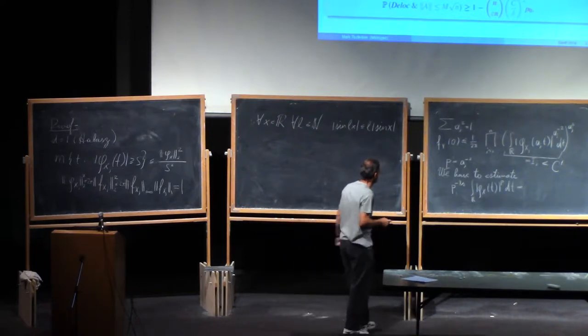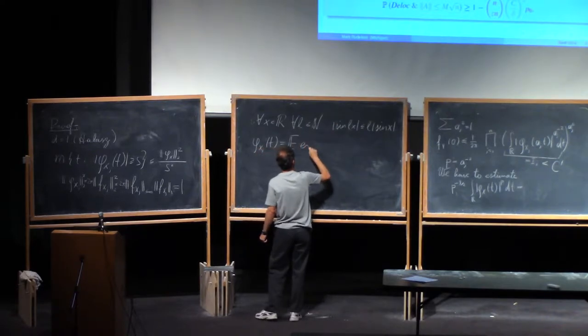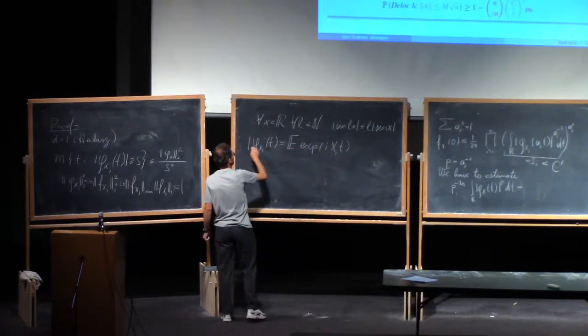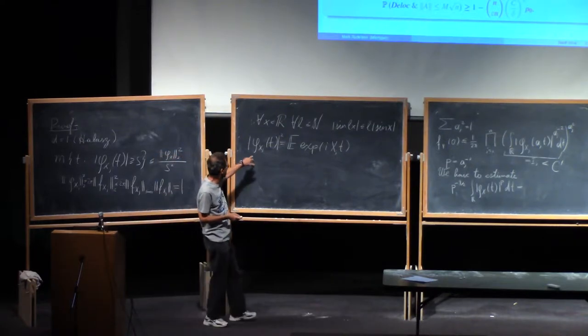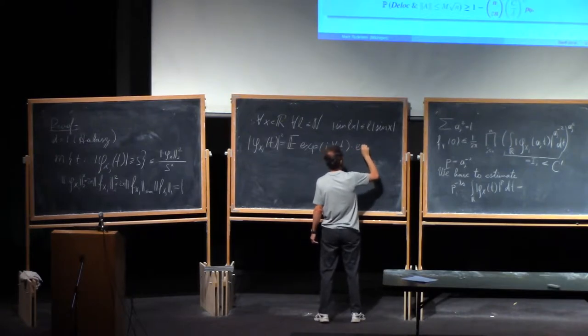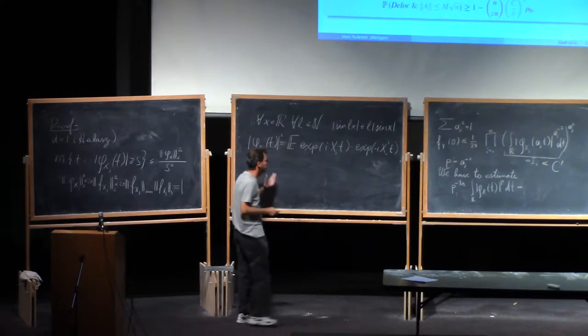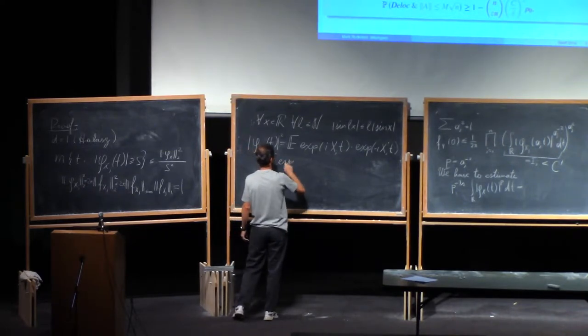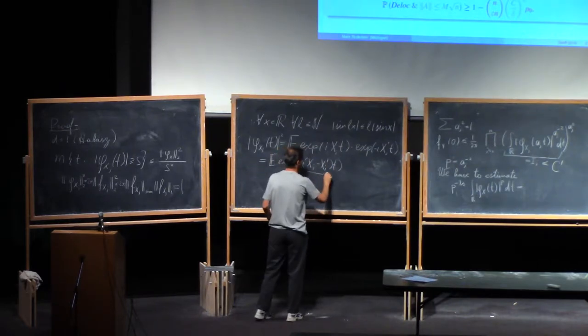Now let's look at the characteristic function, phi xj of t. This is the expectation of the exponential of i xj t. And let's take the squared absolute value. One way to take this squared absolute value is to take an independent copy of xj, say xj prime, and multiply it by the exponential of negative i xj prime t. So xj prime is an independent copy of xj and this is the exponential of i times xj minus xj prime t, and let me call this x tilde.